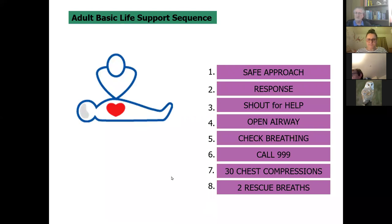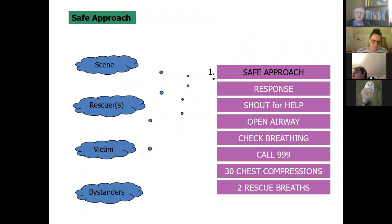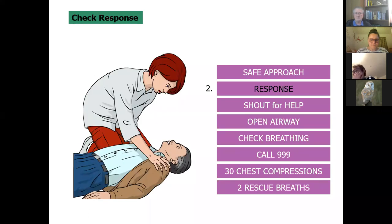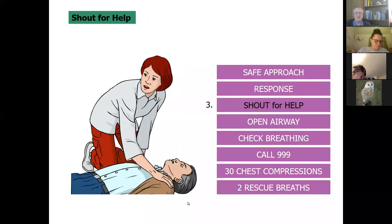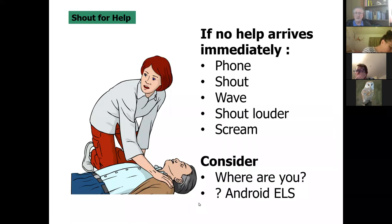If you're single-handed with no chance of assistance, calling 999 takes precedence over everything — even if you have to stop what you're doing. Safety of the scene, safety of rescuers, safety of the victim, safety of bystanders. Check the response: gently shake the shoulders, look, listen. If the patient responds, leave them where they are, find out what's wrong, and reassess regularly. Shout for help — try to overcome your natural reserve — and open that airway.